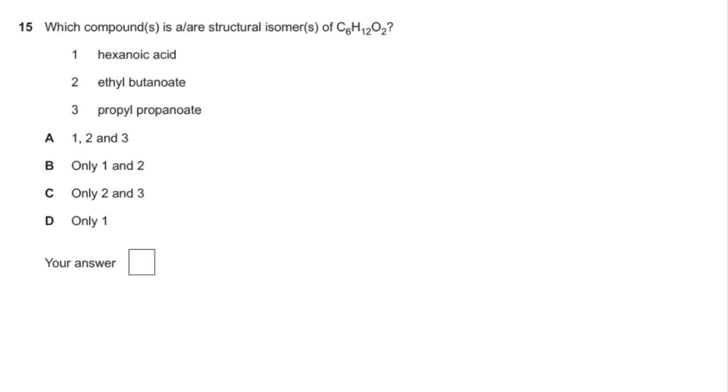And finally, number 15, so this one's testing our knowledge of carboxylic acids and esters and their formulae. We'll just look at the formulae first. Hexanoic acid is C5H11COOH. Ethyl butanoate, so remember esters are named backwards, so ethyl butanoate, so there's four carbons there, that's that one there. And propyl propanoate is that one there. They all have C6H12O2 as their molecular formula, so A was the answer.